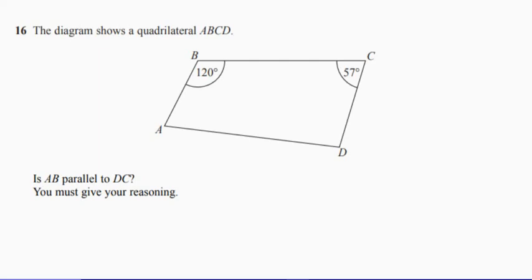Question 16. The diagram shows a quadrilateral. So a quadrilateral is just a four-sided shape.